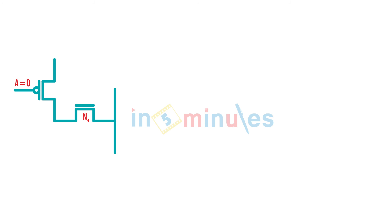Now let us understand what is happening on the right side of the circuit. On the right side, we had a PMOS which was turned on because it got its input from A, which was 0. At the same time, the NMOS transistor labelled N4 was also on because its input was the word line, which was VDD. So P2 was pulling node B up to VDD.